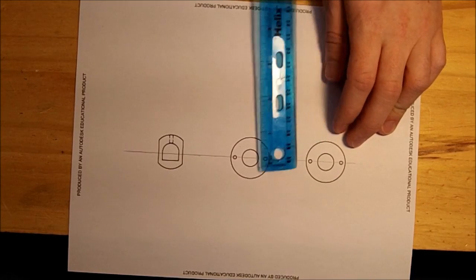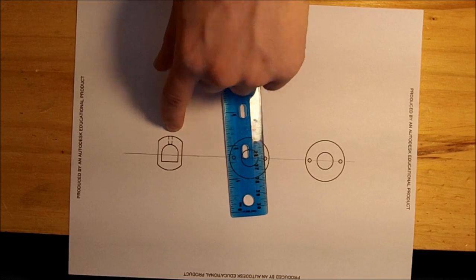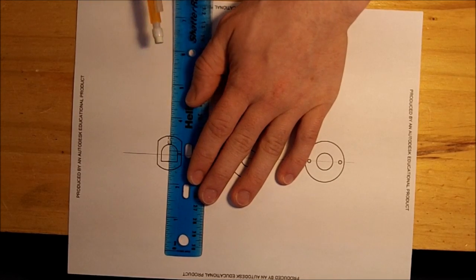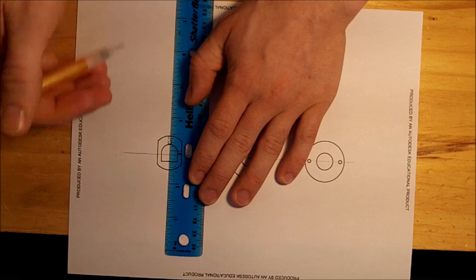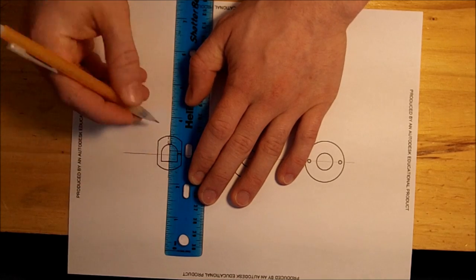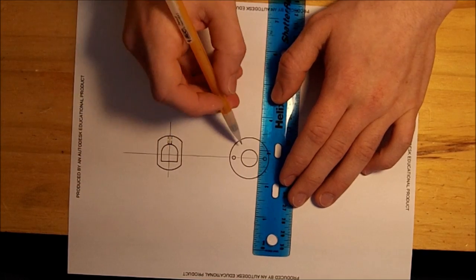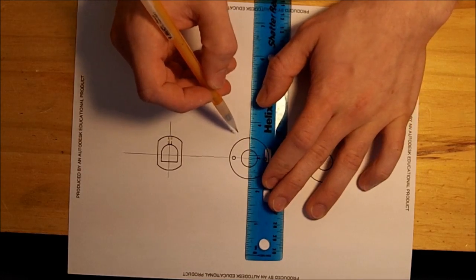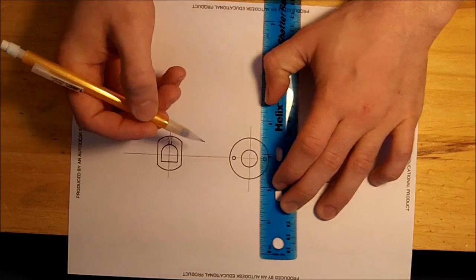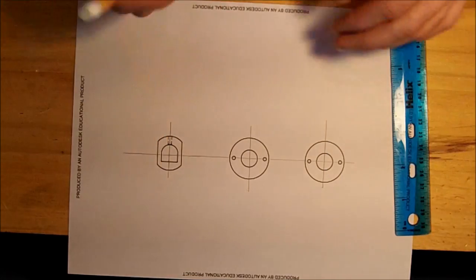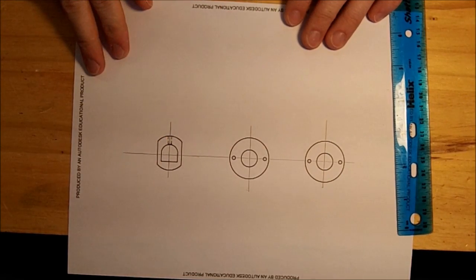Next we need the vertical axis. On the catch itself it's relatively easy because we have the screw hole to use as a guide. On the other two, you'll have to eyeball it. That looks pretty good.